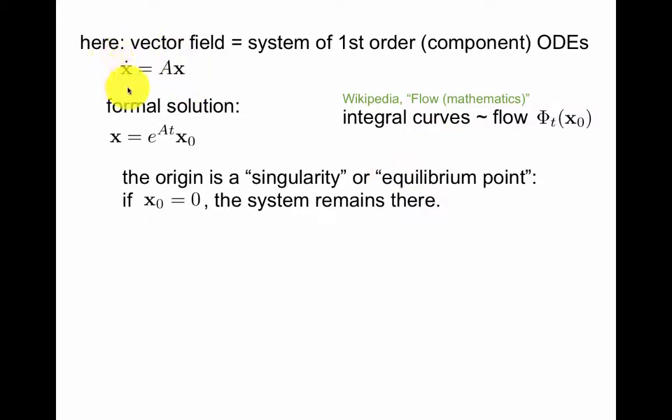So this is what we mean by dynamical system. The vector field specifies the system of first-order component ODEs in the sense that x dot, time derivative, equals matrix times x. The formal solution of this equation is just x equals e to the At x0. So if you plug this equal to 0, then you will stay at 0, as you could have read off from this equation.